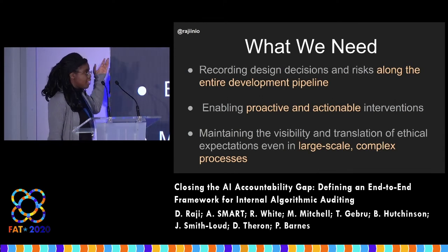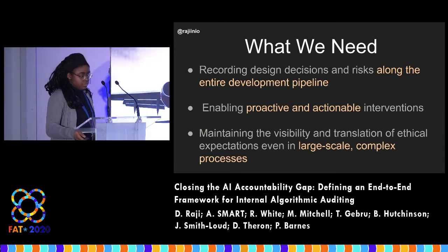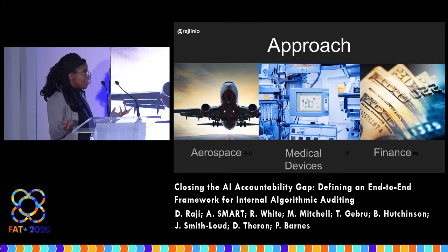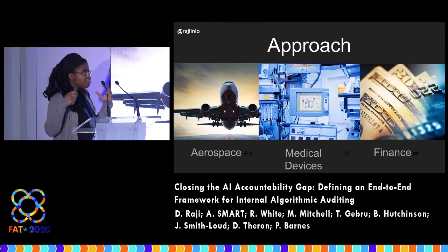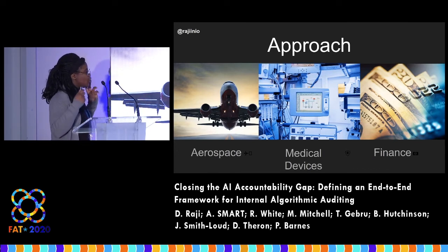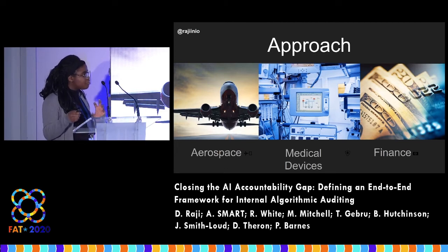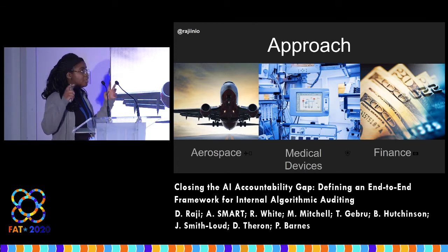It becomes very easy to forget about these principles, especially in very large complex systems involving multiple algorithms interacting in different ways. So we looked at different industries that are already working with complex algorithms in highly regulated spaces or spaces with high ethical standards and principled approaches to development, asking what documentation practices might actually help us address this accountability gap in AI product development.